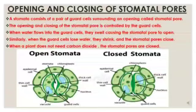The opening and closing of the stomatal pore is controlled by the guard cells. When water flows into the guard cells they swell, which leads to the opening of the stomatal pore. Similarly, when the guard cells lose water they shrink and the stomatal pores close. When a plant does not need carbon dioxide, the stomatal pores are closed. The major function of stomata is to allow exchange of carbon dioxide and oxygen — oxygen is released through the stomata during photosynthesis.